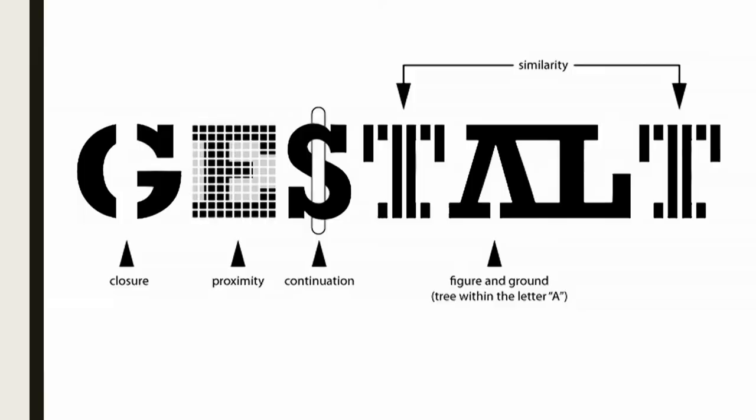Design takes advantage of gestalt principles all the time. This typography is a great meta example. A couple I want to point out: figure and ground — that tree you see within that letter, we view that occlusion as a separate object even though it's really just white space. And then continuation as well — in that 'S', we're perceiving that row in the middle as being solid all the way through, even though on a conscious level we know it's only comprised of broken lines. I highly encourage you to spend a little more time with gestalt on your own.